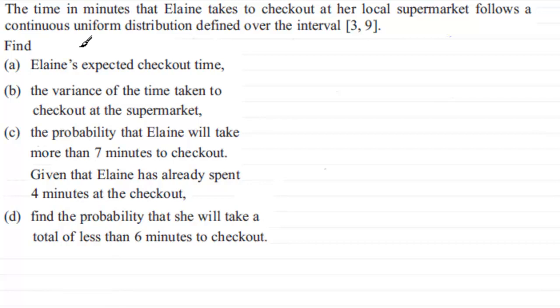Okay, well, what we've got here is that the time in minutes that Elaine takes to check out at a local supermarket follows a continuous uniform distribution defined over the interval 3 to 9.